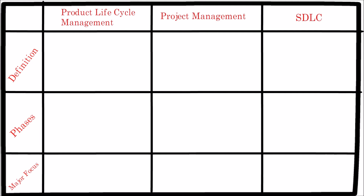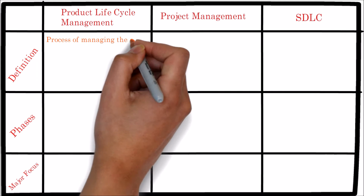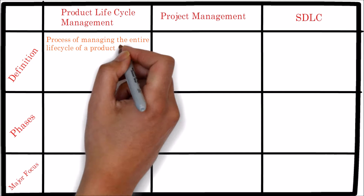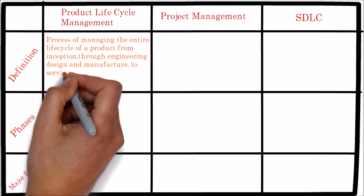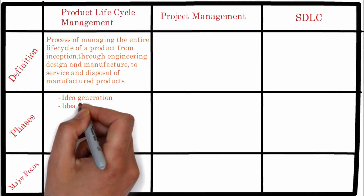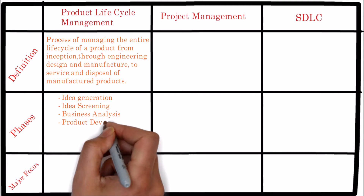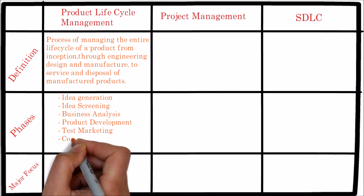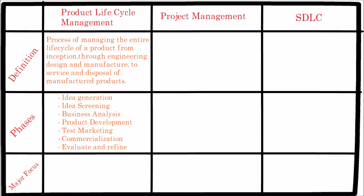Product lifecycle management is the process of managing the entire lifecycle of a product from inception through engineering, design, and manufacture to service and disposal of manufactured products. Generally, product lifecycle management has the following phases: idea generation, idea screening, business analysis, product development, test marketing, commercialization, and evaluation.